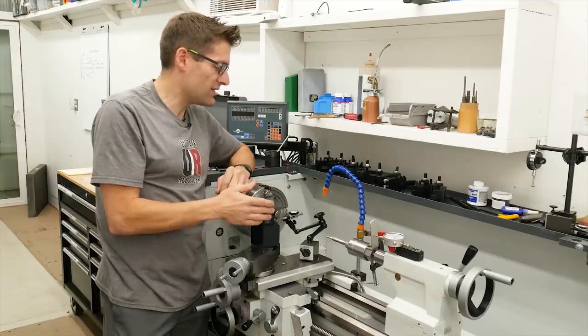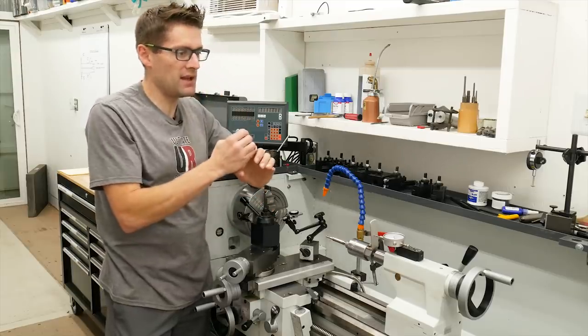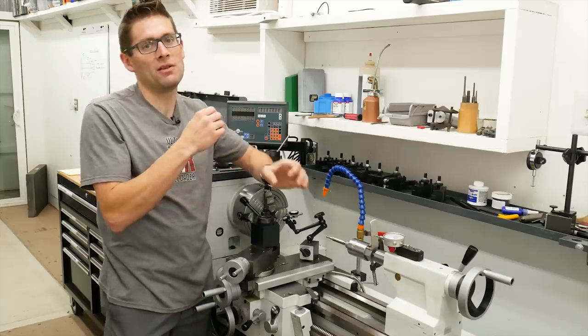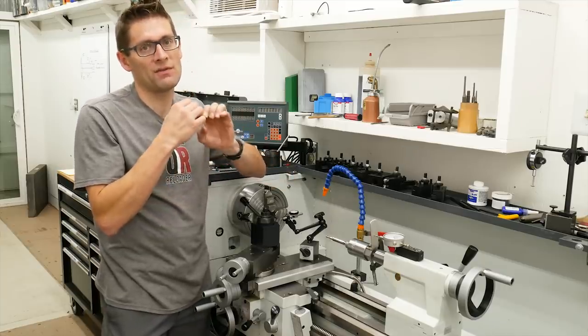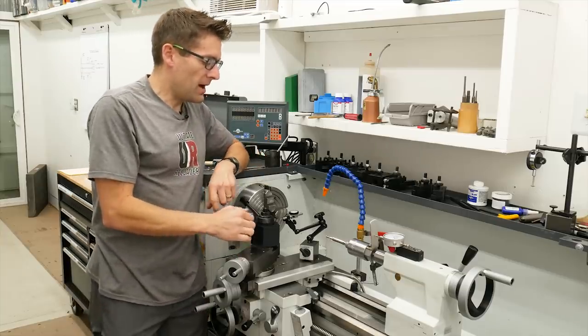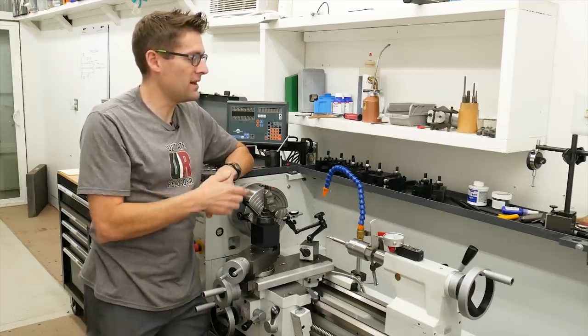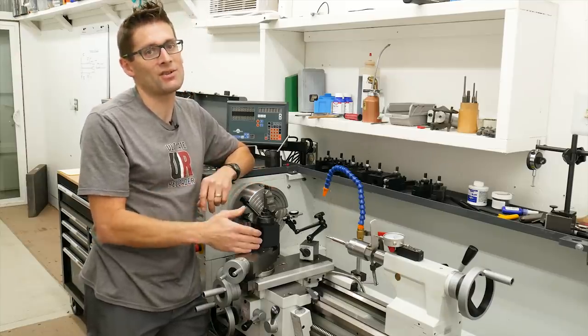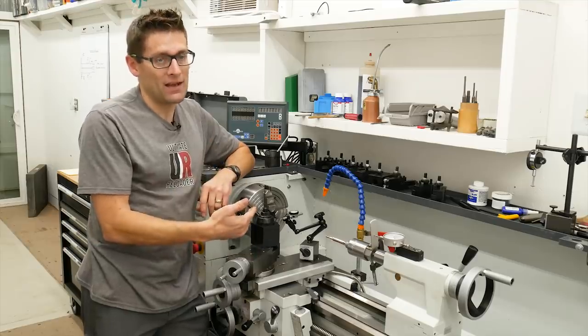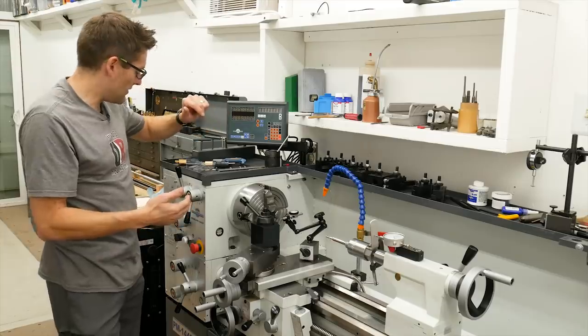And these threads are super critical because ultimately they kind of define the interface between the receiver and the barrel in terms of the concentric alignment. So take your time. I like to try and get a really good surface finish. And with these carbide tools, I'm finding that sometimes the lathe likes a faster speed. Last time I did a barrel, I threaded it at 70 RPM.